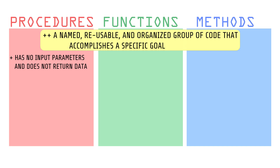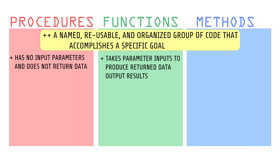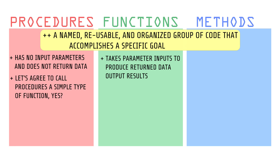A function, however, takes some inputs and returns an output — not all that different from a math function. The confusion here is because you can make a void function that returns nothing and has no input parameters, but it's still written with a function header in that same code structure. So let's agree that a procedure is a specific type of function that has no input parameters and no return value, where a typical function does have inputs and outputs.